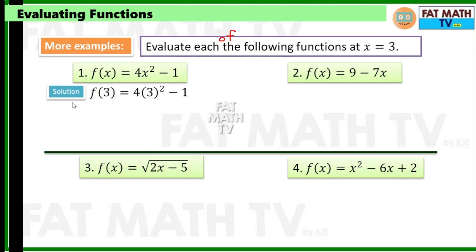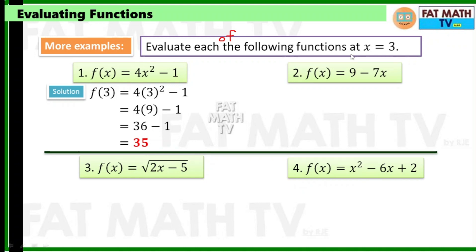That's going to be f of 3 equals 4 times 3 squared minus 1. We have here multiplication, squaring, and subtraction, so you have to do the squaring first. 3 squared is 9, so that's 4 times 9, which is 36. 36 minus 1 is 35. So f of x equals 4x squared minus 1 is equal to 35 at x equals 3.